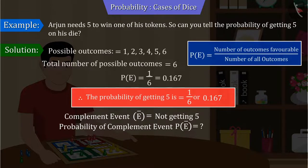Hope you remember that we can find the probability of a complement event using this formula. By which the probability of not getting 5 and getting the numbers 1, 2, 3, 4 or 6 is 5 by 6.